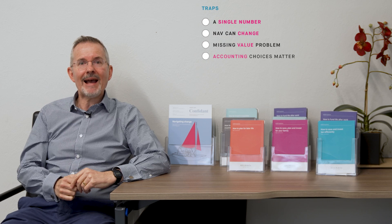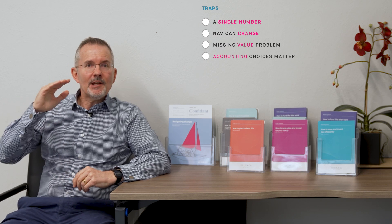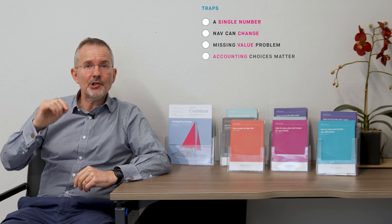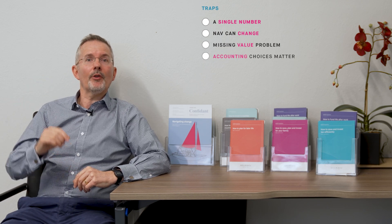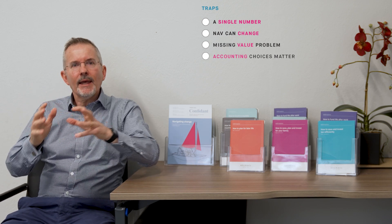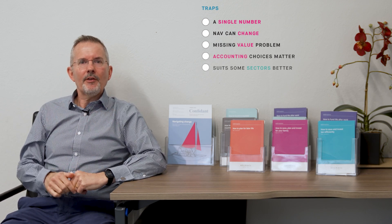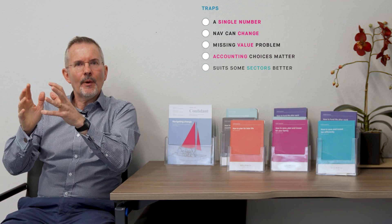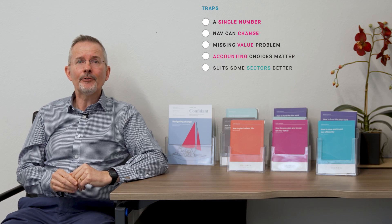Accounting choices matter. The book — the NAV of a business — is dependent on the depreciation policies, the amortisation policies, and so on that are chosen. So although you can benchmark that, it's important to be aware of it. And frankly, this ratio, which is very much net asset value valuation focused, suits some sectors better than others.